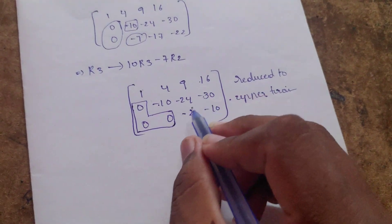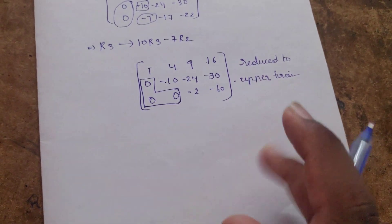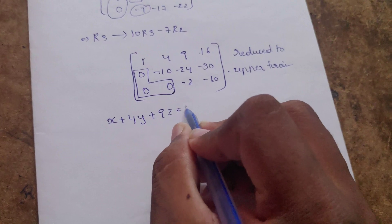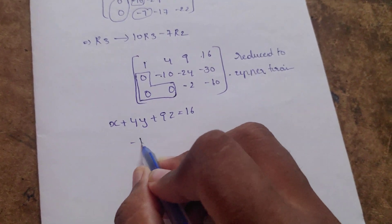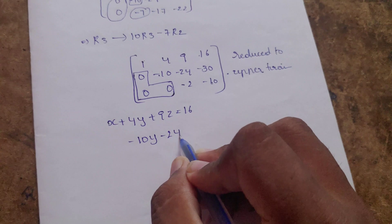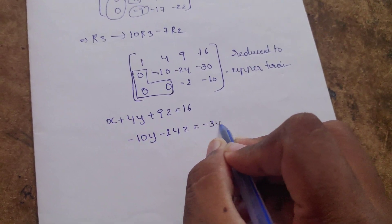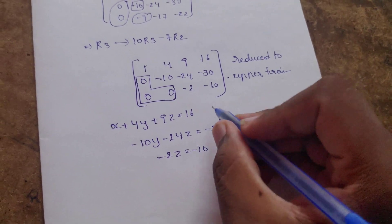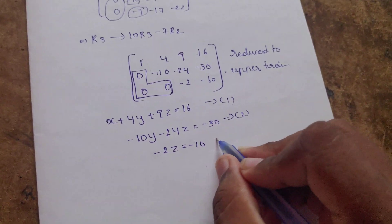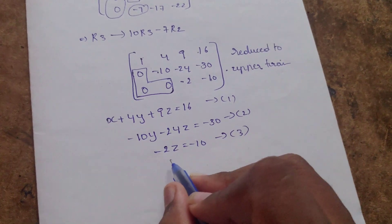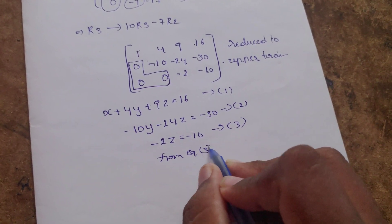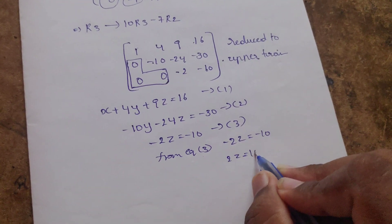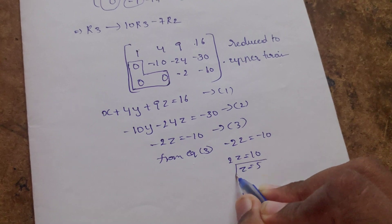Therefore: x plus 4y plus 9z equals 16, minus 10y minus 24z equals minus 30, and minus 2z equals minus 10. Let these be equations 1, 2, and 3. From equation 3: minus 2z equals minus 10, so z equals 5.